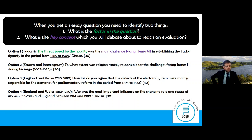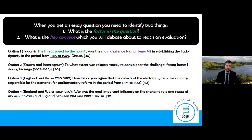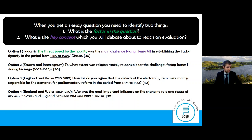You're going to talk about the threat posed by the nobility as a challenge facing Henry VII, but also other things that are challenges. Crucially, you're going to debate which of those is the main challenge. I always underline the years in the question — in this case 1485 to 1509 — to really remind and focus you that you need to cover that whole time period to get those band six marks.